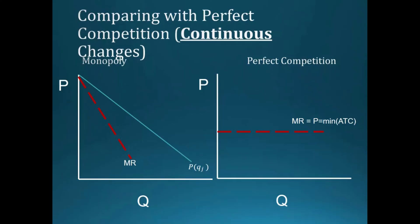We can also look at this graphically. The left-hand side depicts a monopoly market and the right-hand side depicts perfect competition. In the monopoly market, the marginal revenue curve is downward sloping and steeper than the inverse demand curve. This is because as the firm increases output, in order to sell to the next marginal consumer it must drop its price, and that price drop applies to all units — so it gains revenue from the additional unit but earns less on all previously sold units.